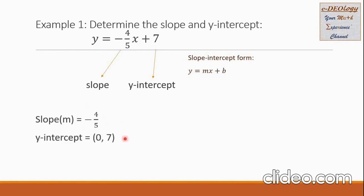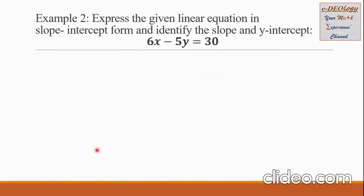While for the y-intercept, we will take this 7 — that will be the y-coordinate, and the x-coordinate will always be 0. This is our final answer.